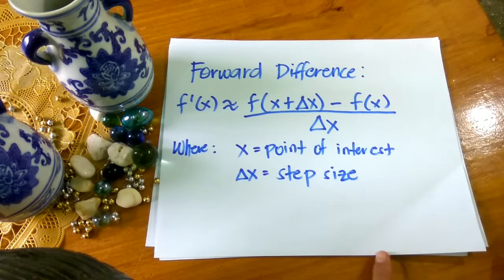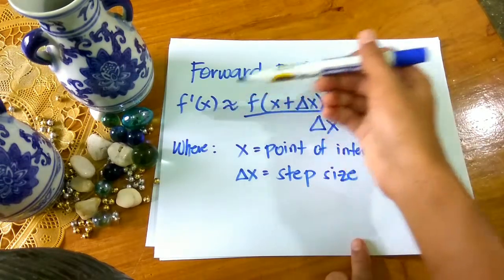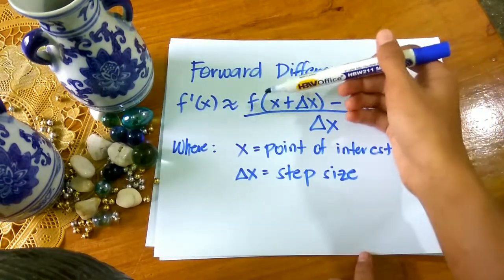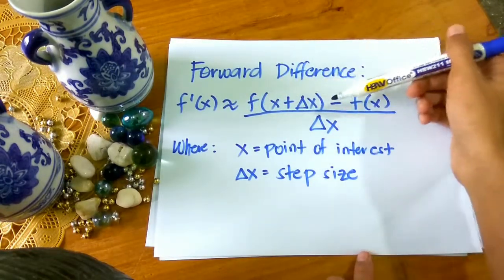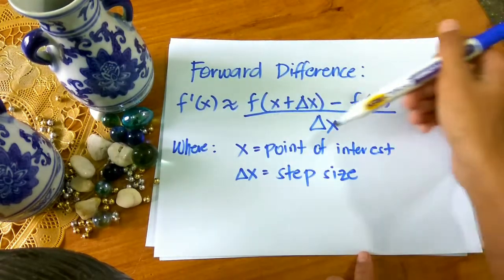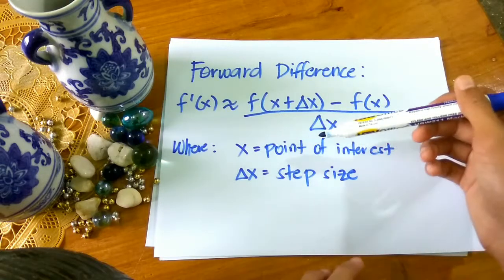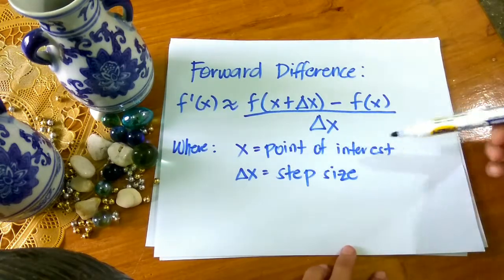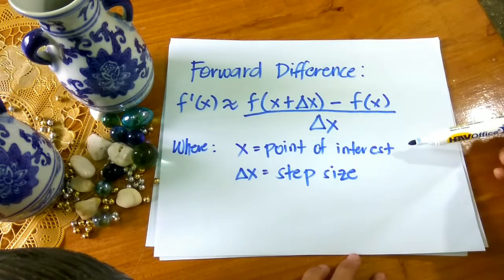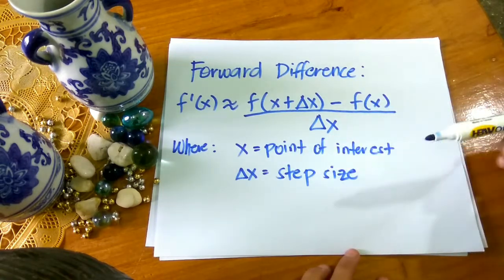So for forward difference, the formula is: the derivative of the function of x is equal to the function of x plus delta x, minus the function of x, over the delta x. Where x is the point of interest which is given in the problem, and delta x is the step size which is also given in the problem.